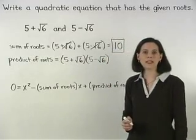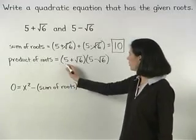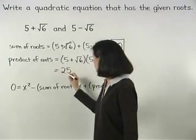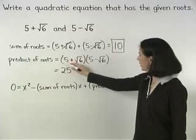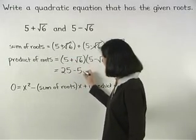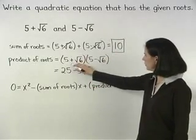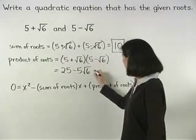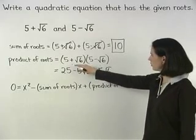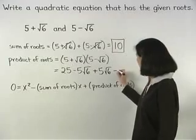To simplify from here, we use the FOIL method. The product of the first terms, 5 times 5 is 25. The product of the outer terms, 5 times negative root 6 is negative 5 root 6. The product of the inner terms, positive root 6 times 5 is positive 5 root 6. And the product of the last terms, positive root 6 times negative root 6 is negative 6.